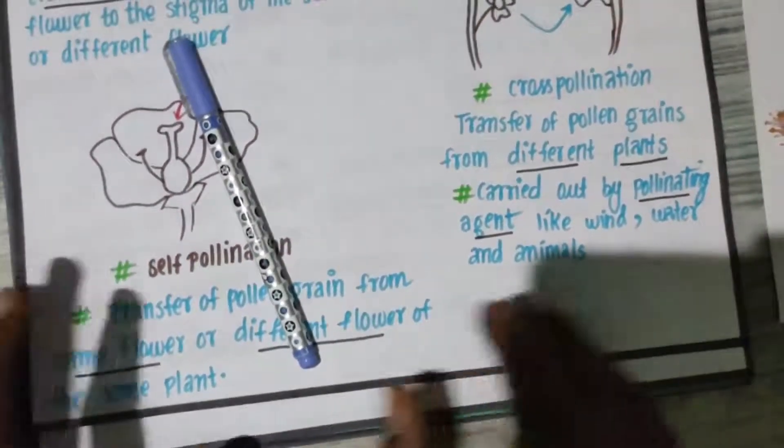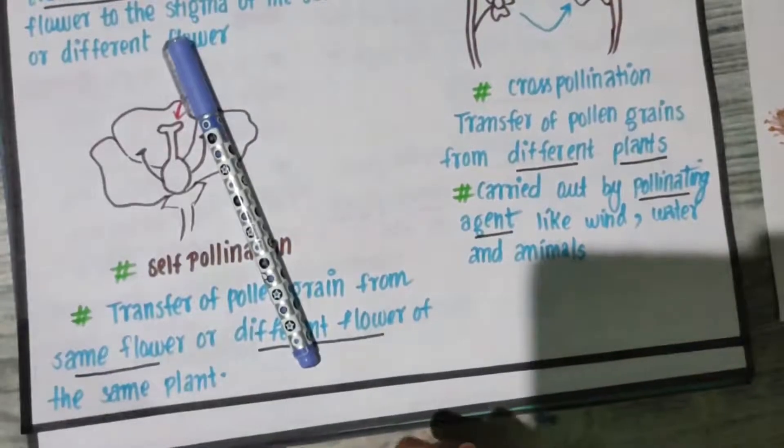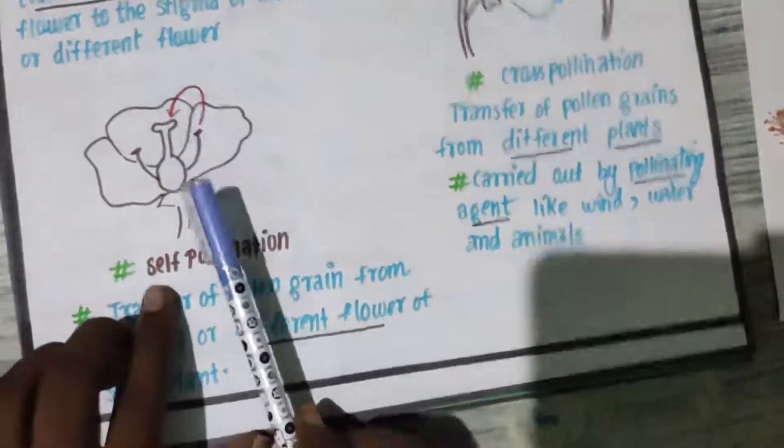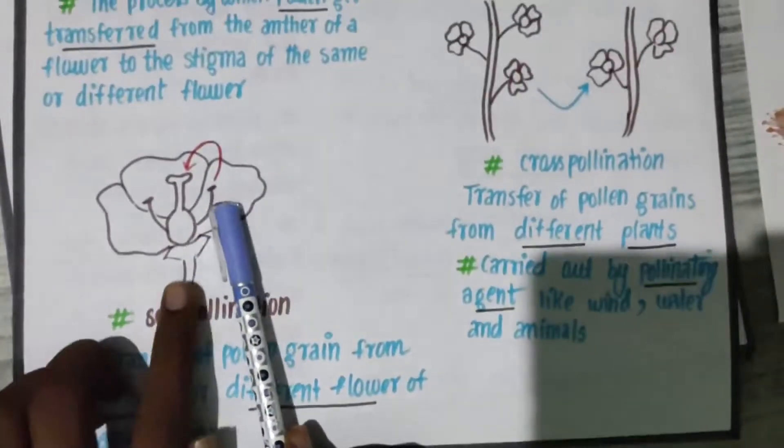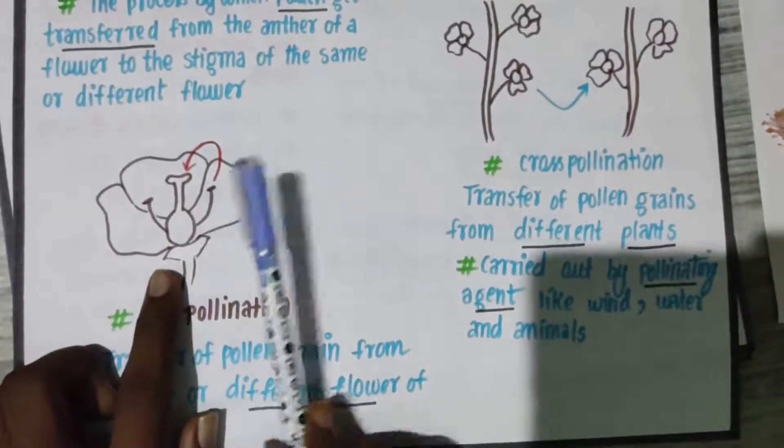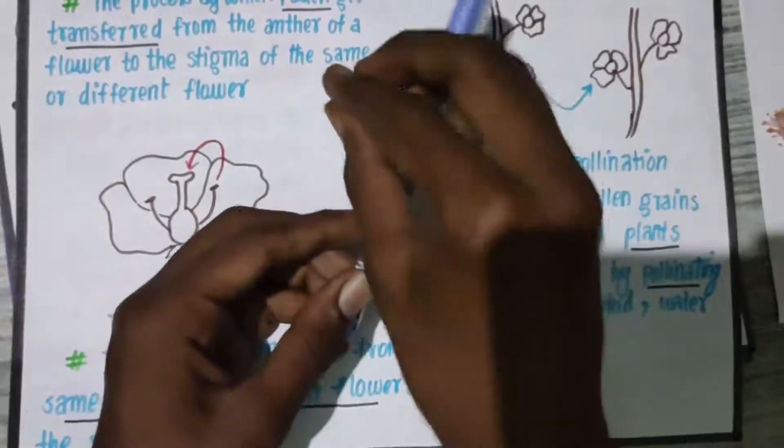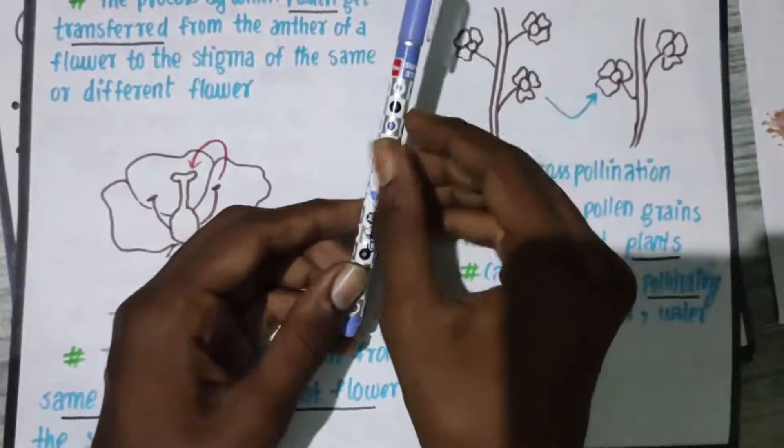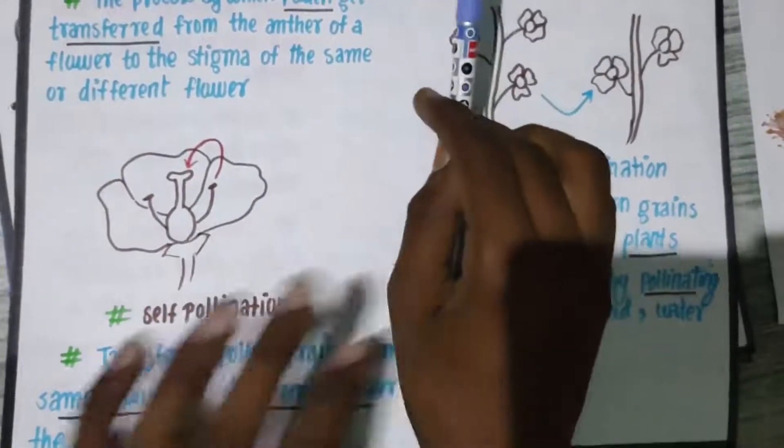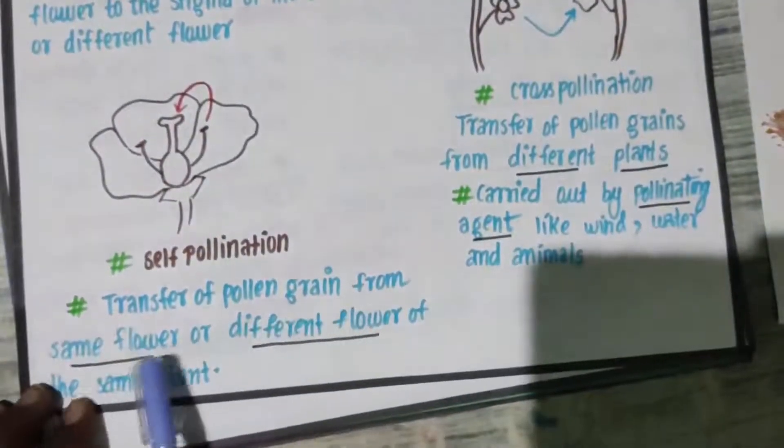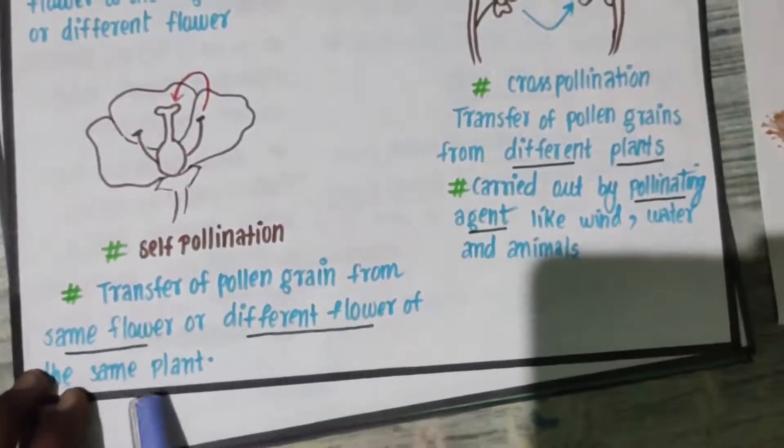Self-pollination, what does it mean? One plant will have multiple flowers. You say it is self-pollination - same flower or same plant. This plant to another flower, it is going to be self-pollination only. Transfer of pollen grains from the same flower or different flower of the same plant.